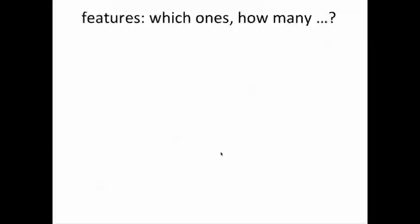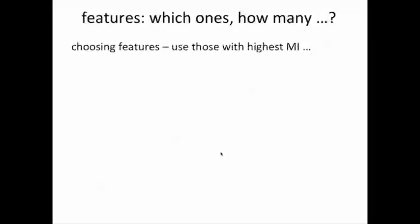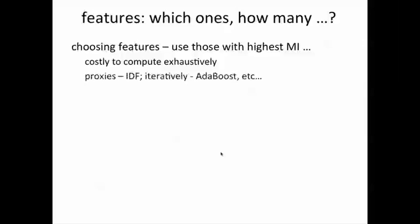Mutual information tells us which features — words in our example — are good predictors of the behavior we want to predict. Should we not use those with the highest mutual information as our features? The trouble is the actual mutual information from the formula is very difficult to compute exhaustively. There are just so many different possibilities with large numbers of features. So in practice we use proxies.